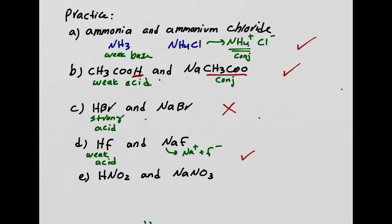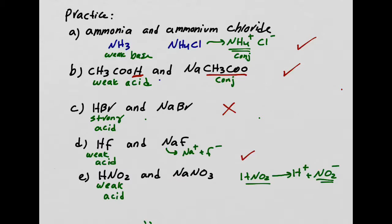HNO2 — is that a weak acid or strong acid? It's a weak acid, so it fits the first requirement. Now, NaNO3 — is that the conjugate of HNO2? It is not. If HNO2 loses the hydrogen, the conjugate would be NO2-. But I gave you NaNO3, and NO3- is not the conjugate of HNO2. Not only do you have to have a weak acid or base, you have to have its conjugate. This is not a buffer solution.